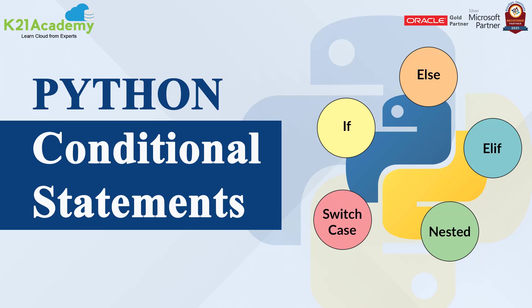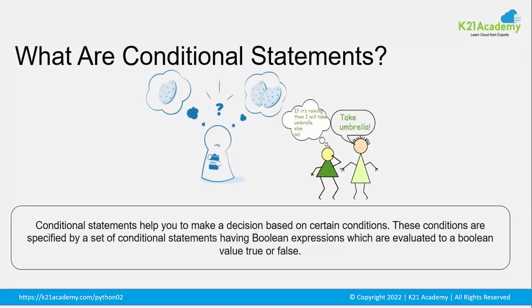Let us now get started by understanding what are condition statements in Python. So what are condition statements? Like, let's say you want to make a decision here — you want an algorithm to tell on its own whether something is right or wrong. You obviously have to tell the system what is right and what is wrong, and you want some decision making to happen because not every time you can add static data. Condition statements are basically what can make a decision for a certain action to be done.